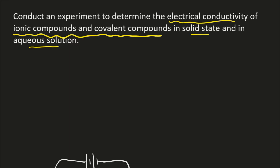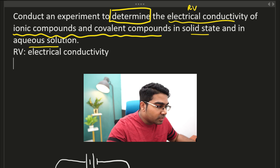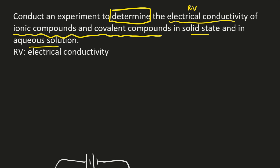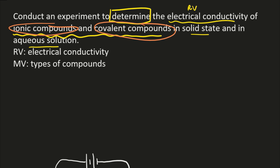The first thing to do when you read a question is to determine the MV and the RV. The thing that comes after the word 'determine' in this format is usually the responding variable. So the RV is the electrical conductivity, and the manipulated variable will be the types of compounds that we are using for each experiment, since we are using ionic compounds as well as covalent compounds.